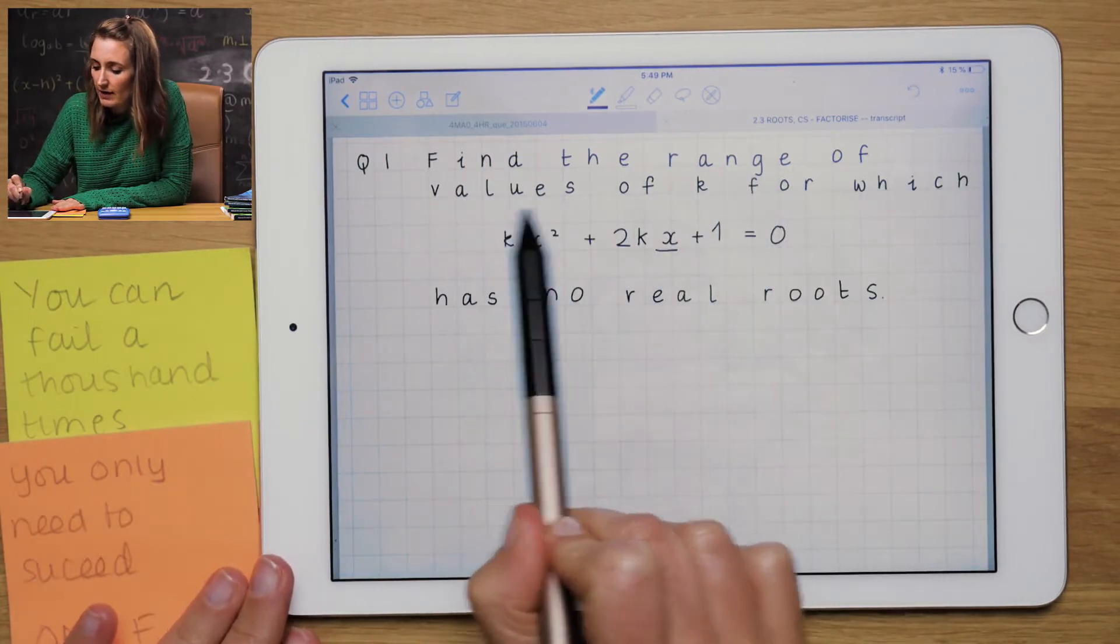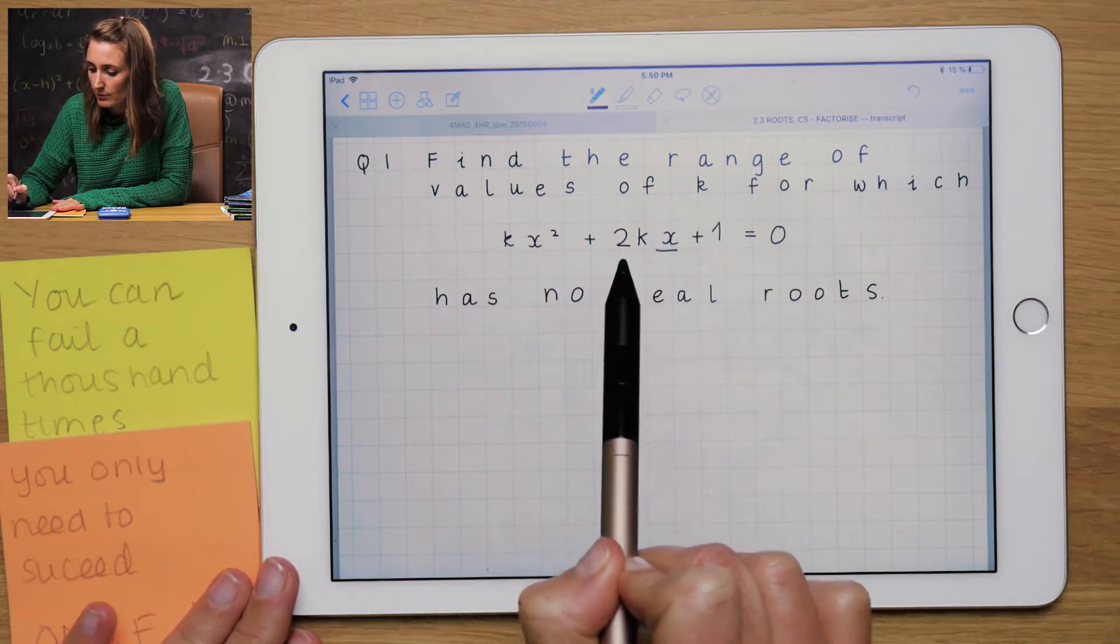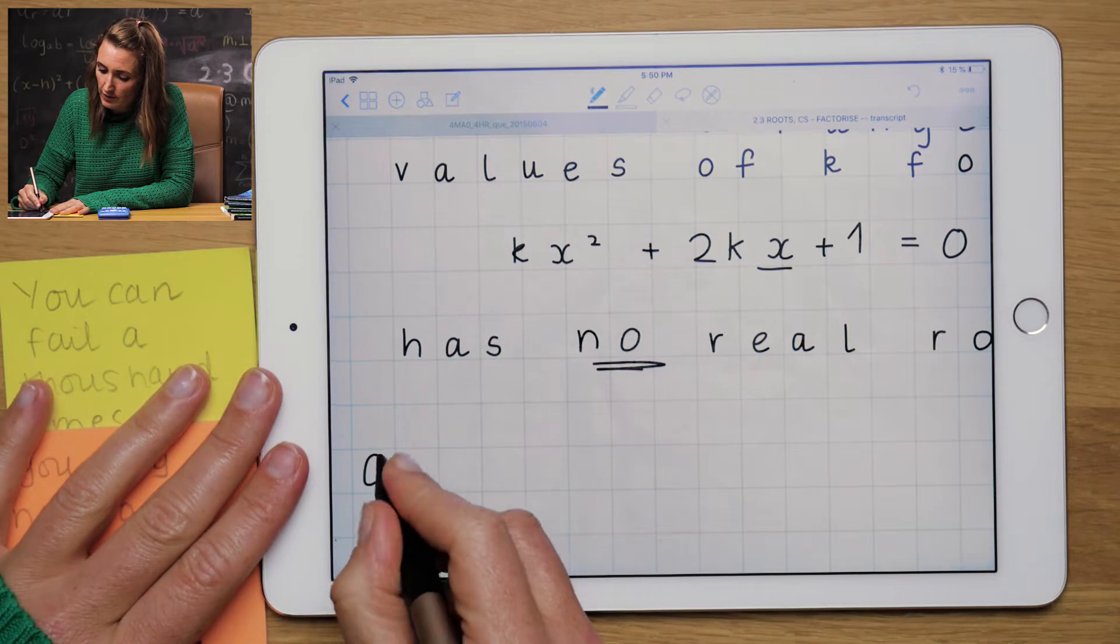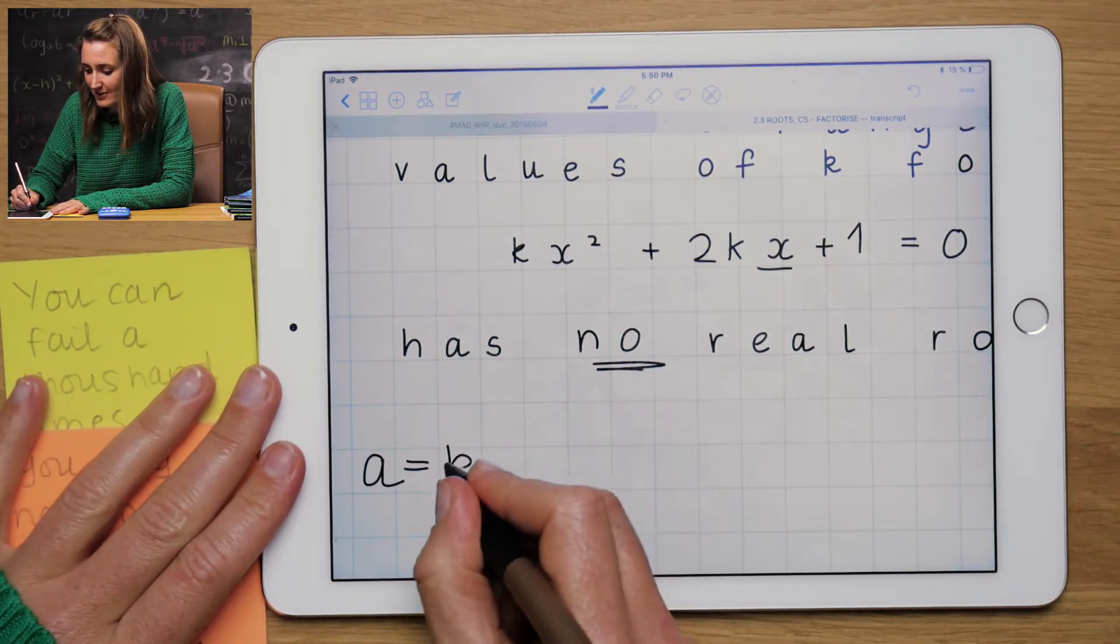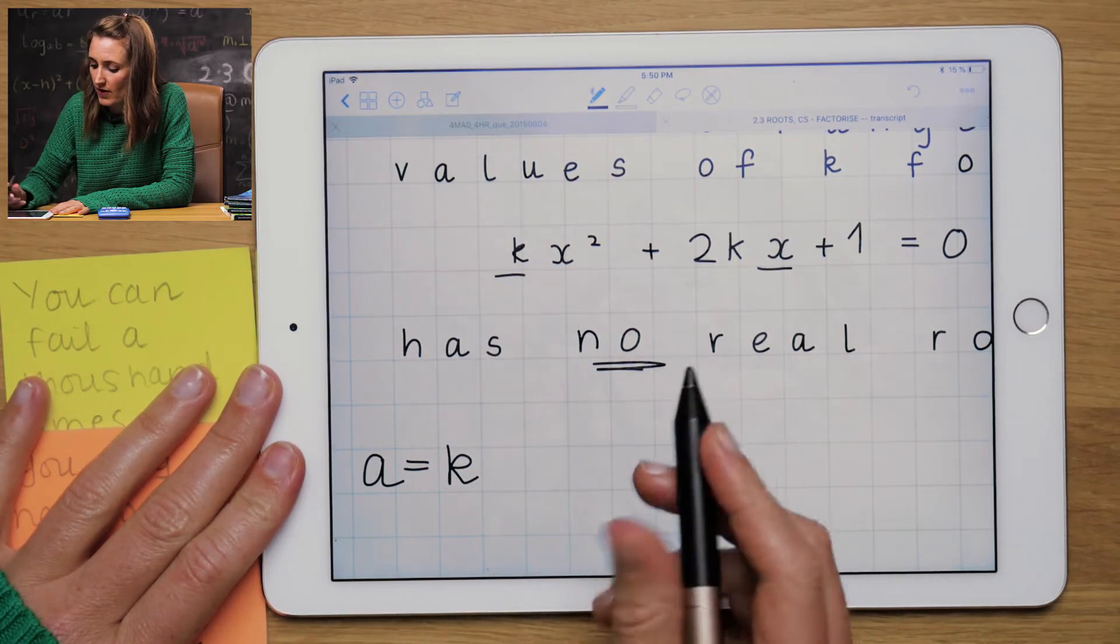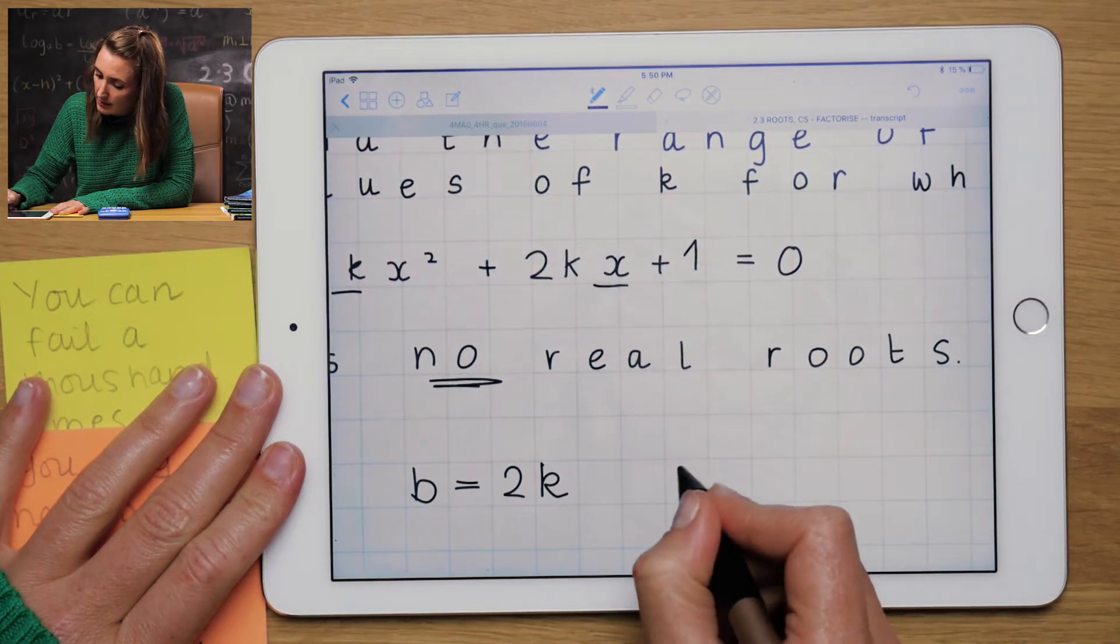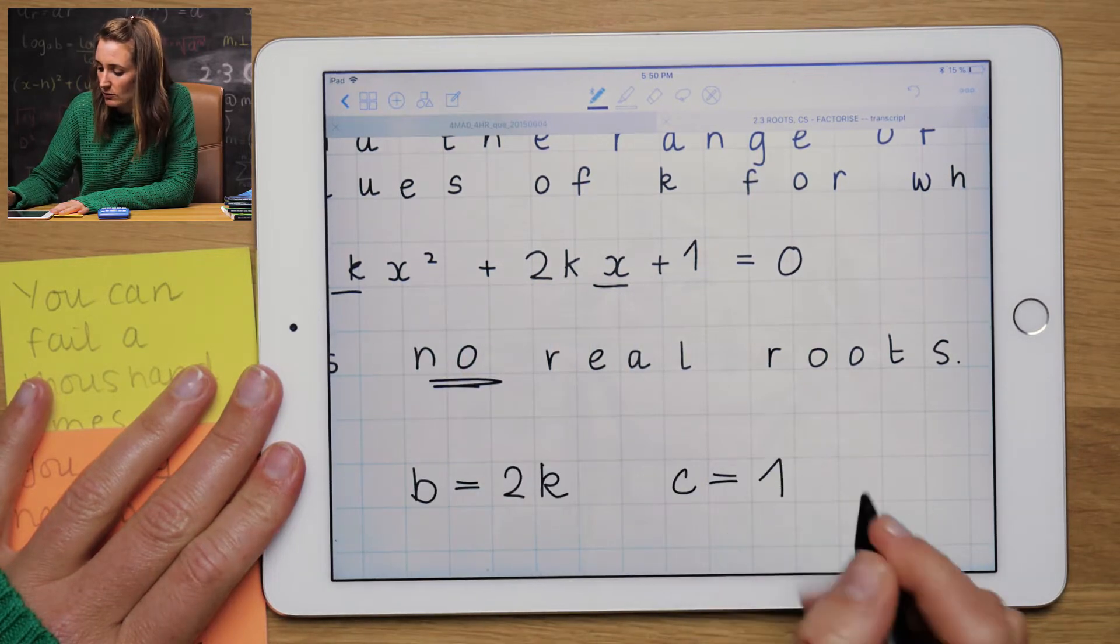Find the range of values of k for which this equation kx squared plus 2kx plus 1 has no real roots. So just like the previous videos, if you didn't watch them, you must watch them. A is the coefficient of x squared. B is the coefficient of x, which is 2k. And c is the number that is not connected to an x or x squared, in this case 1.